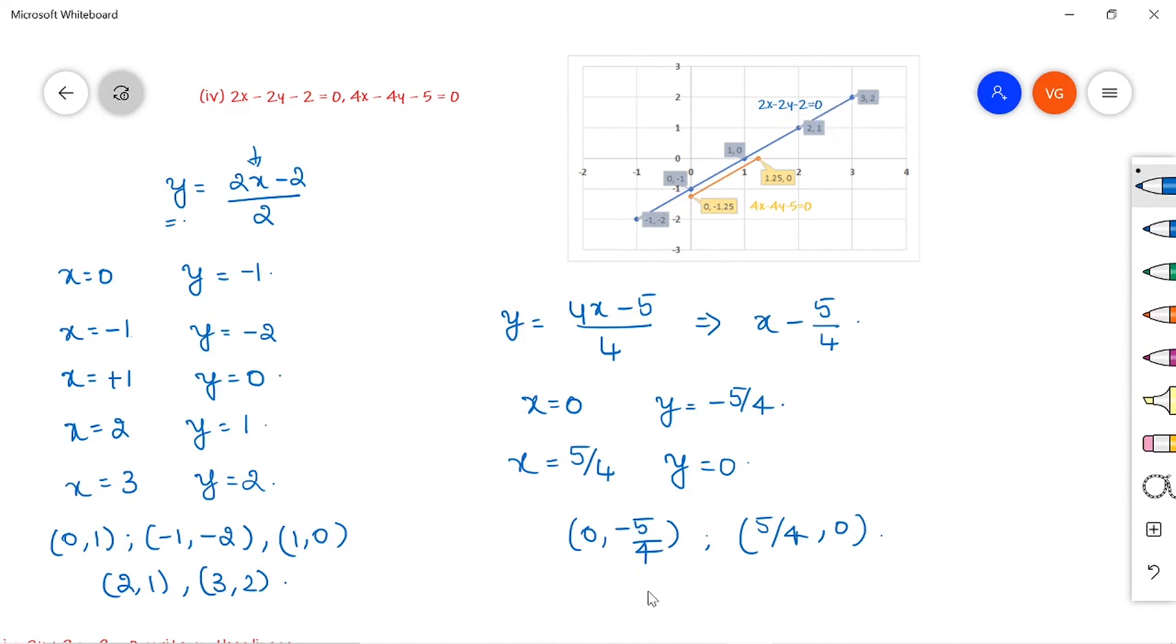Similarly, these two points are also marked and joined, and this straight line indicates 4x minus 4y minus 5 equals 0. These two lines are parallel to each other, so there is no common solution and the given set of linear equations are inconsistent.